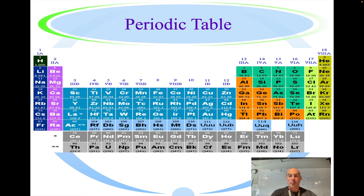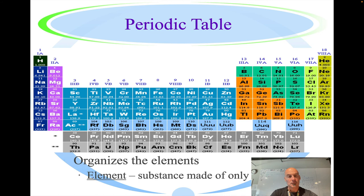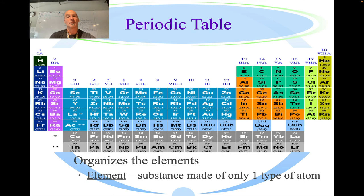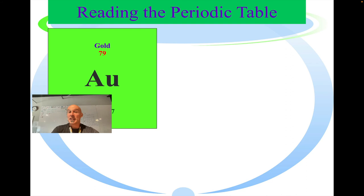The periodic table. This is an organization of all of the elements. And again, we are going to go a little bit more in depth in that in a separate lecture. The periodic table organizes the elements, and the element is the substance that is made of only one type of atom. So hydrogen, lithium, helium.